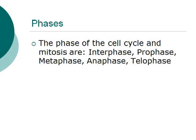The phases of the cell cycle and mitosis are: interphase, prophase, metaphase, anaphase, and telophase.